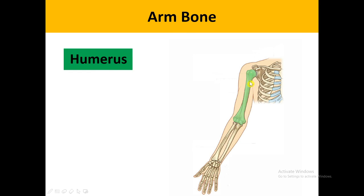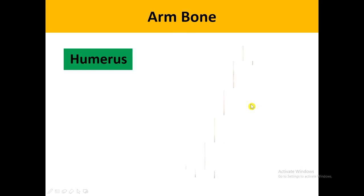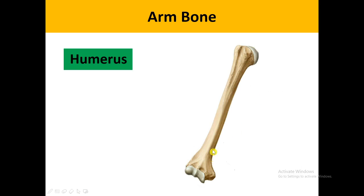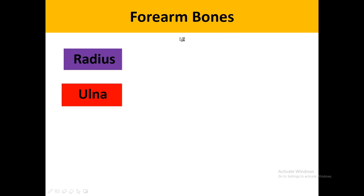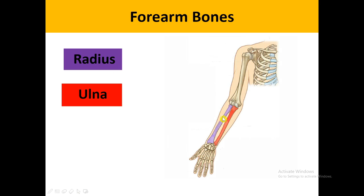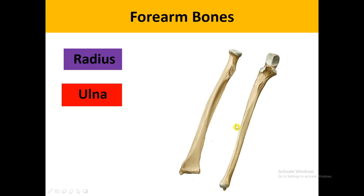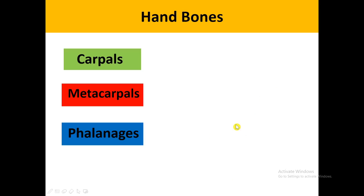Now coming to the arm bone, the humerus, represented here in green color — it is a long bone. For the forearm bones we have two bones: the radius and the ulna, represented here in purple and red color. In the anatomical position, the radius is the lateral bone and the ulna is the medial bone. Both are long bones.